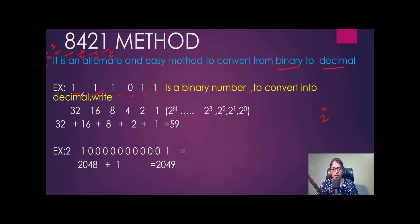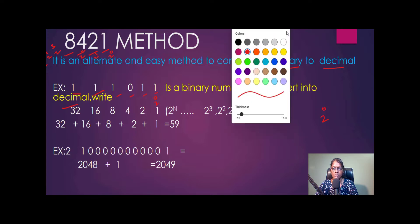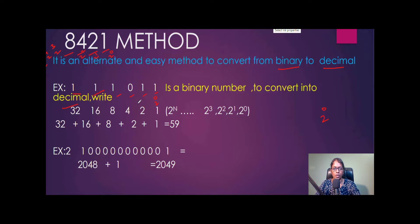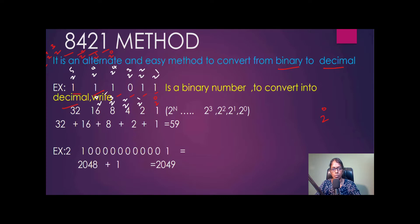For example, take the binary number 1 1 1 0 1 1 and convert it into decimal. Starting from the right, the first 1 is 2 to the power 0, the next is 2 to the power 1, then 2 to the power 2 (which is 0 here), then 2 to the power 3, 2 to the power 4, and 2 to the power 5. Wherever a 1 is present, we multiply that bit by its corresponding power of 2.